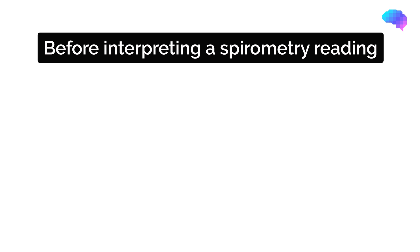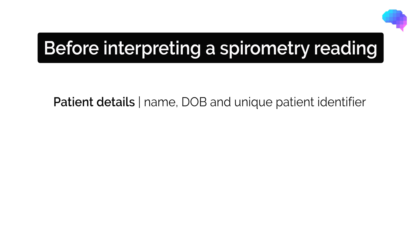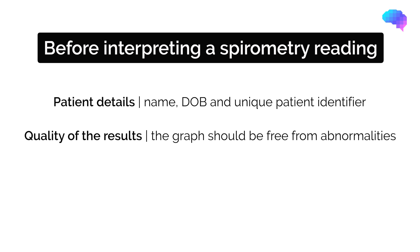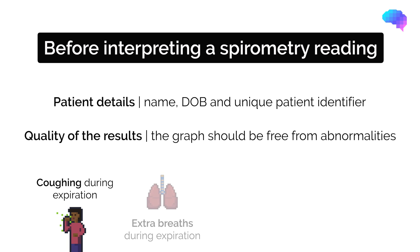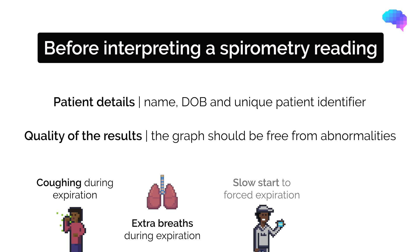Before interpreting a spirometry reading, it's important to check the following. Firstly, check the patient's details, including their name, date of birth, and unique patient identifier. Secondly, check the quality of the results. Abnormalities in spirometry readings can be caused by coughing during expiration, extra breaths during expiration, a slow start to forced expiration, and submaximal effort.